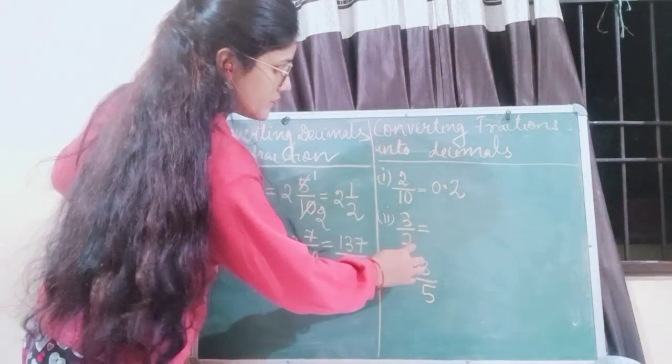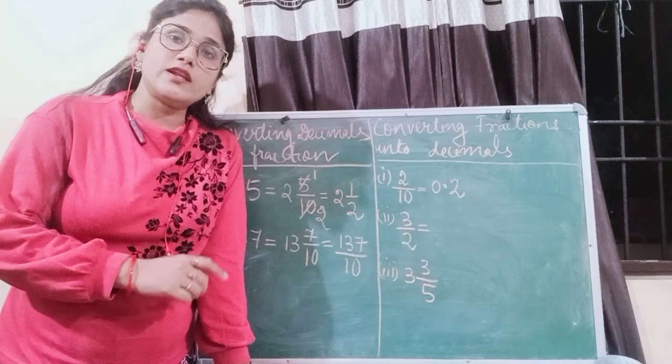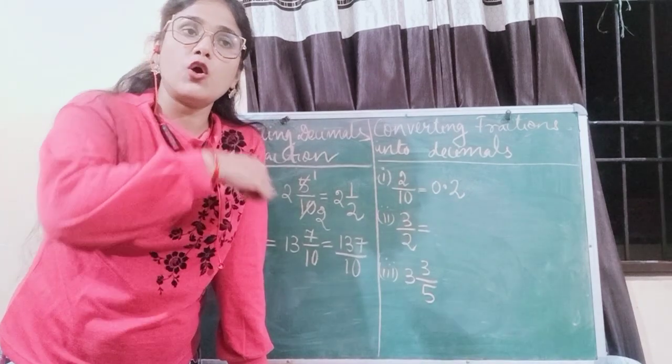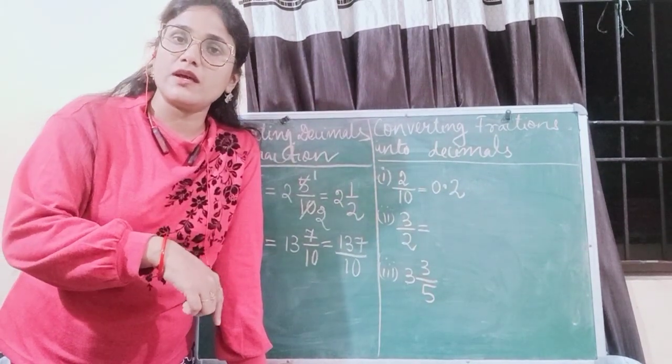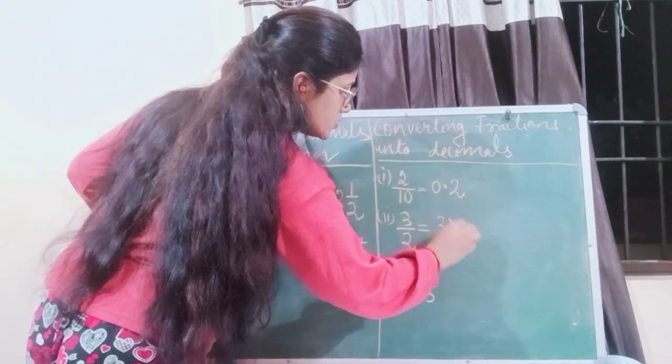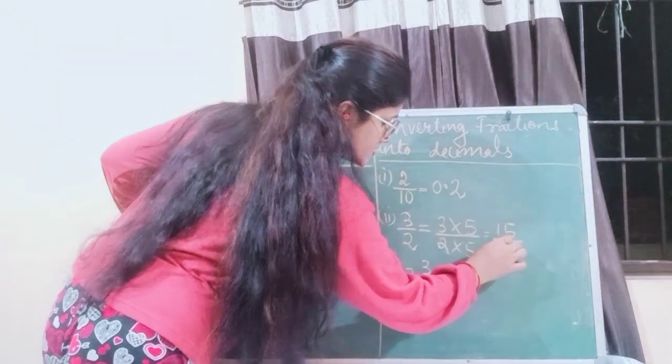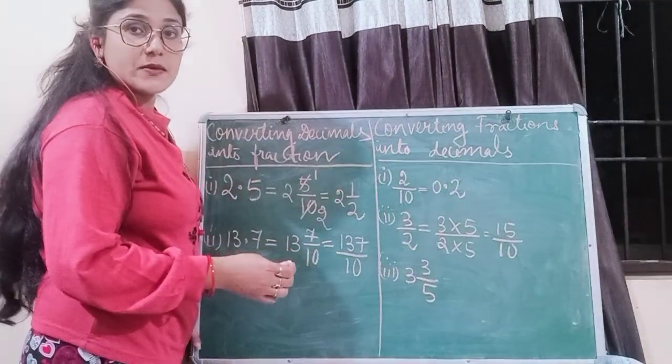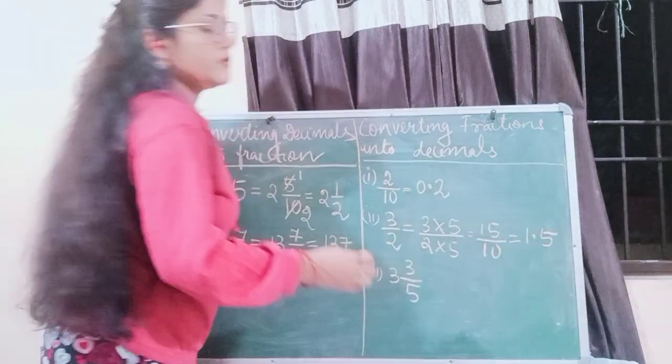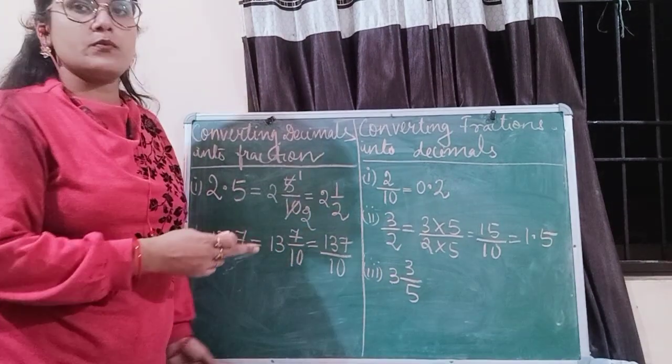You will multiply 5 with the denominator to make it 10. But the rule of equivalent fractions says that when you are multiplying a number to the denominator or numerator, you need to multiply it with both. So 5 will be multiplied with the numerator and the denominator and we get 15 by 10, and 15 by 10 can be written as 1.5. So the decimal representation of 3 by 2 is 1.5.